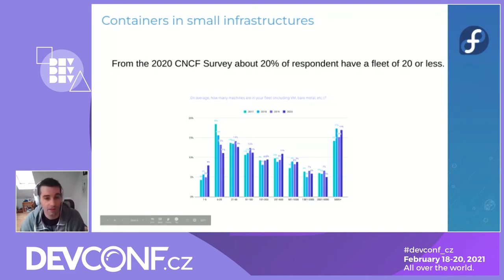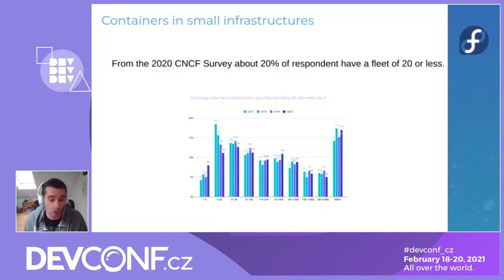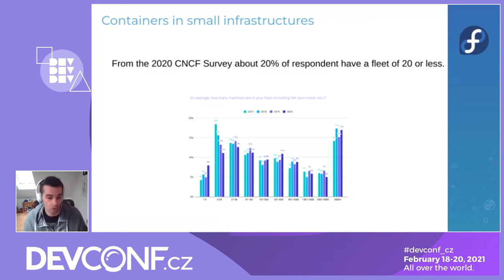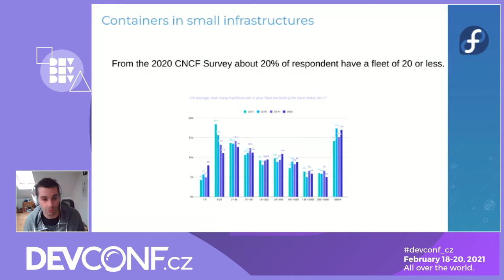People with a very small infrastructure — one to five VMs or bare metal servers — are starting to run containers. Does it make sense when you have such a small infrastructure to run Kubernetes? In some cases yes, but I think it's also nice to have alternatives and not necessarily default to Kubernetes.